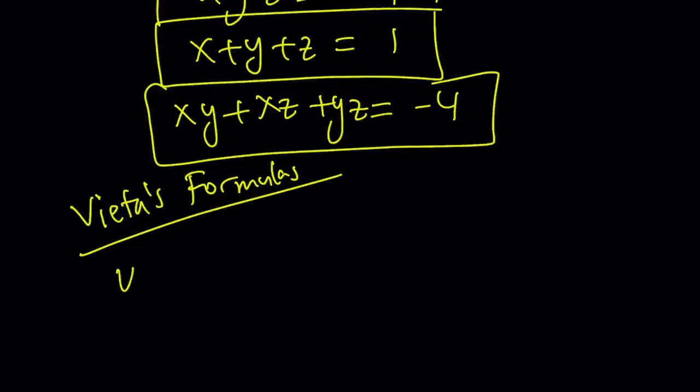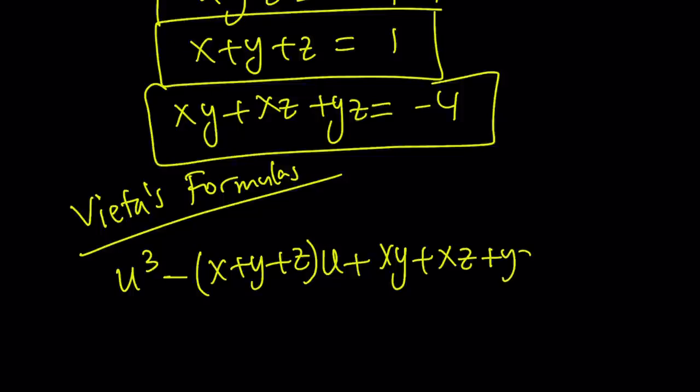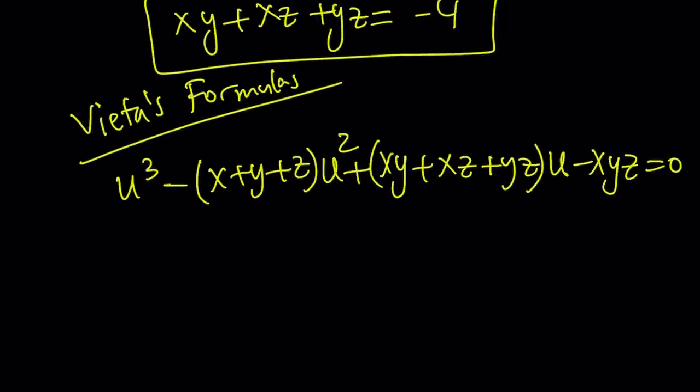So it's going to look like this. Suppose we use u as a variable. So it's going to be like u cubed minus x plus y plus z times u, and then plus xy plus xz plus yz. By the way that's not a u, that's a u squared. I messed up on that one. And then minus xyz. So this is basically the equation whose roots are x, y, and z by Vieta's formulas.